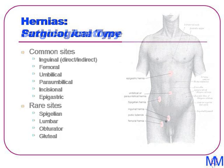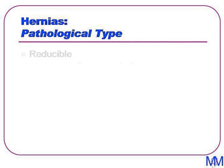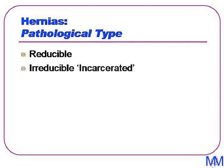The next way of classifying a hernia is by its pathological type. Most hernias are reducible, meaning they can be easily poked back in. However, the next stage up the pathological ladder is an irreducible hernia where the hernia cannot be reduced. This is also known as incarcerated, and may be due to a narrow neck or adhesions between the hernial contents and the sac.